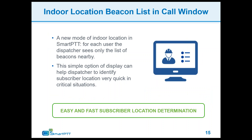We now have an indoor location beacon list in the call window. When we first released the indoor tracking feature with SmartPTT 9.0, we were surprised by the number of requests from people who did not want to see indoor location on a map — usually due to union restrictions on tracking employees. In response, we've created a list of beacons in the call window showing which beacon a unit is near, which still helps you quickly identify a subscriber's location in case of an emergency.